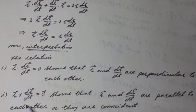The relation R vector cross dR vector over dt is equal to 0 vector shows that R vector and dR vector over dt are parallel to each other or they are coincident.